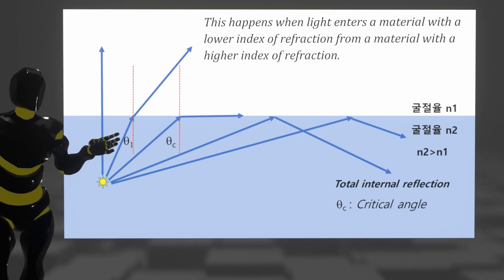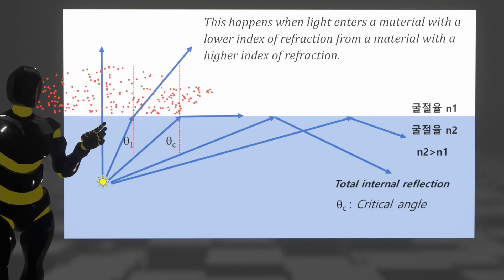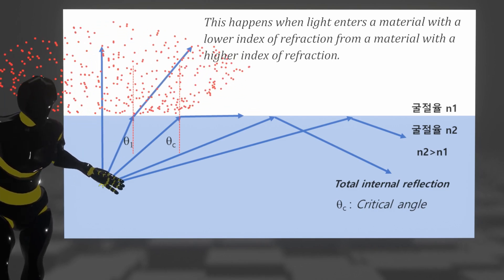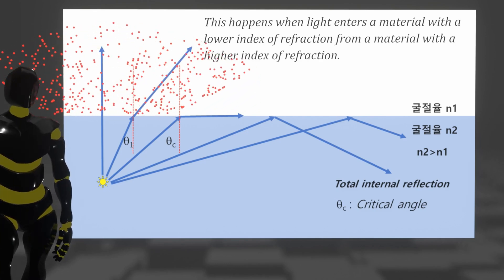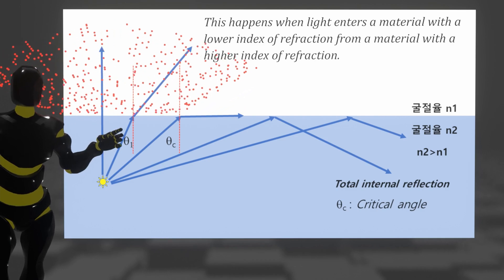In other words, the light whose propagation direction is close to the vertical direction of the interface between the high refractive material and the low refractive material escapes into the air, and the light that is close to the horizontal is trapped inside.